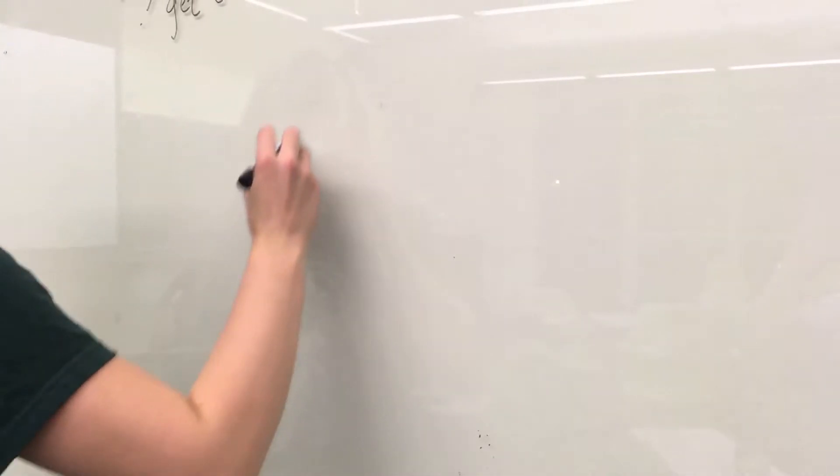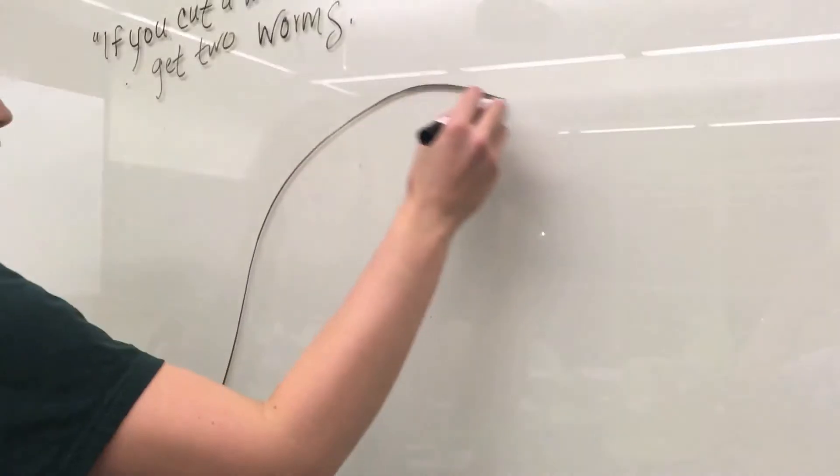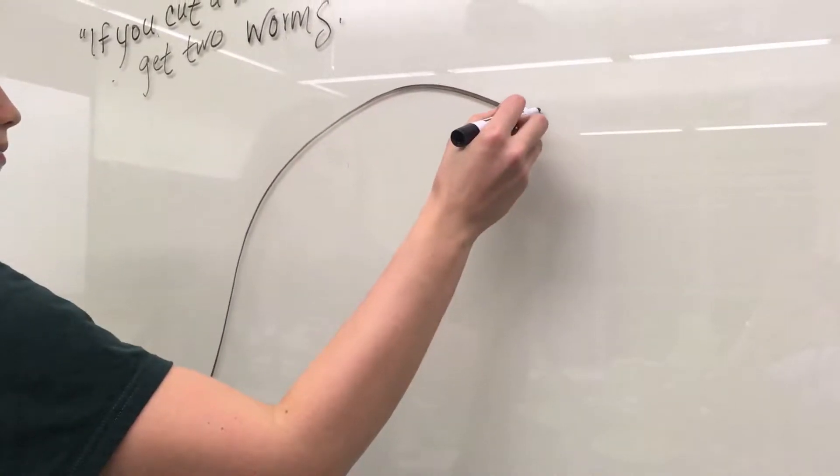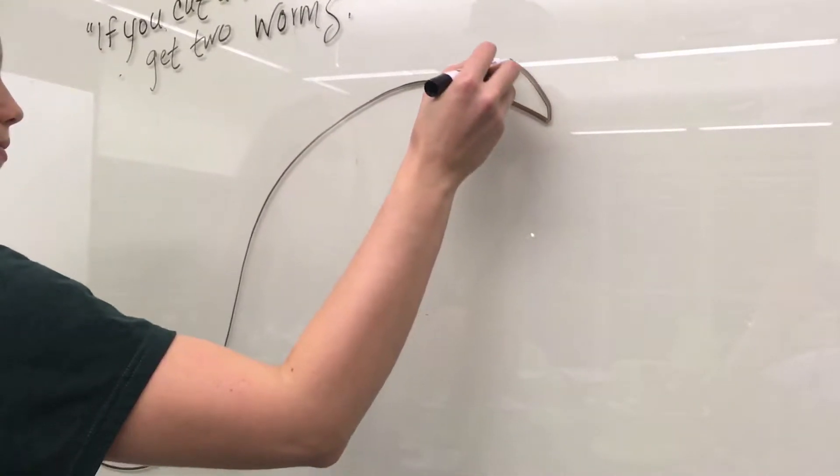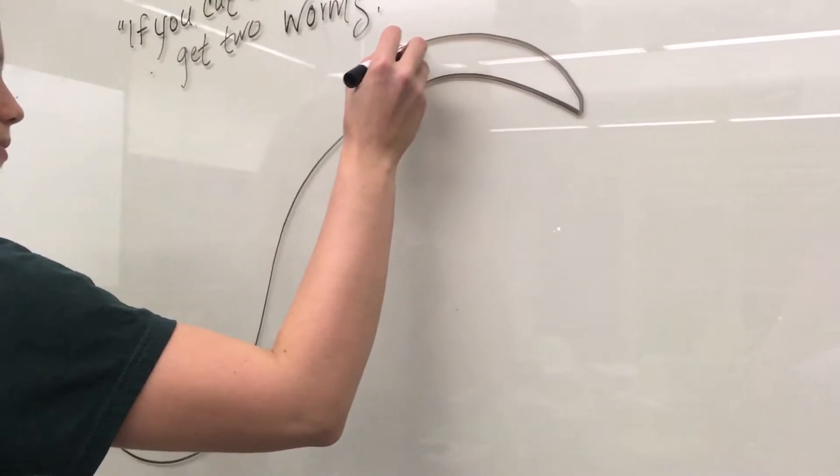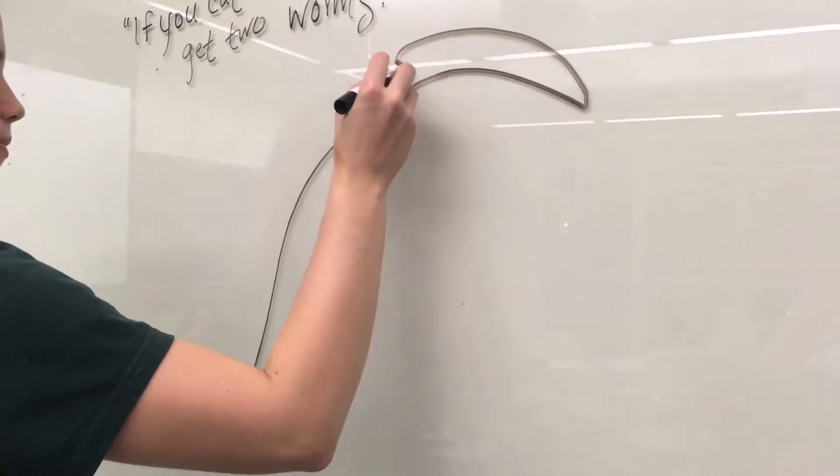The answer depends largely on the type of worm and where it's cut. The common British earthworm, Lumbricus terrestris, can generally survive being cut in half, as long as it's severed near enough to the tail end to leave most of its vital organs intact.